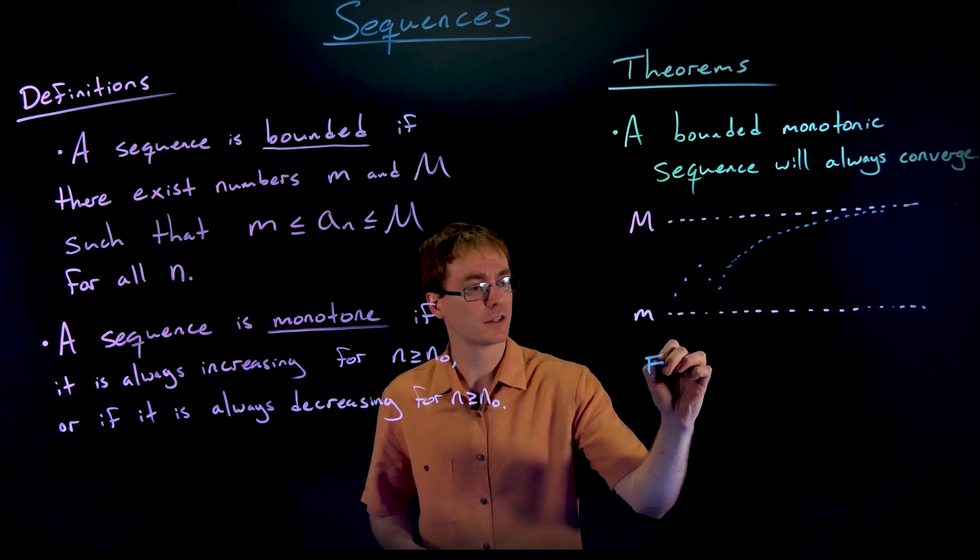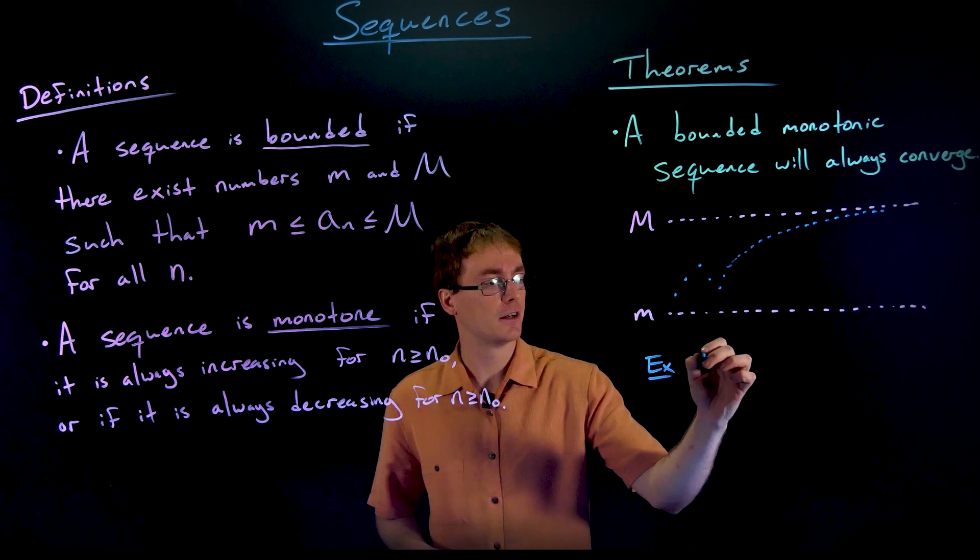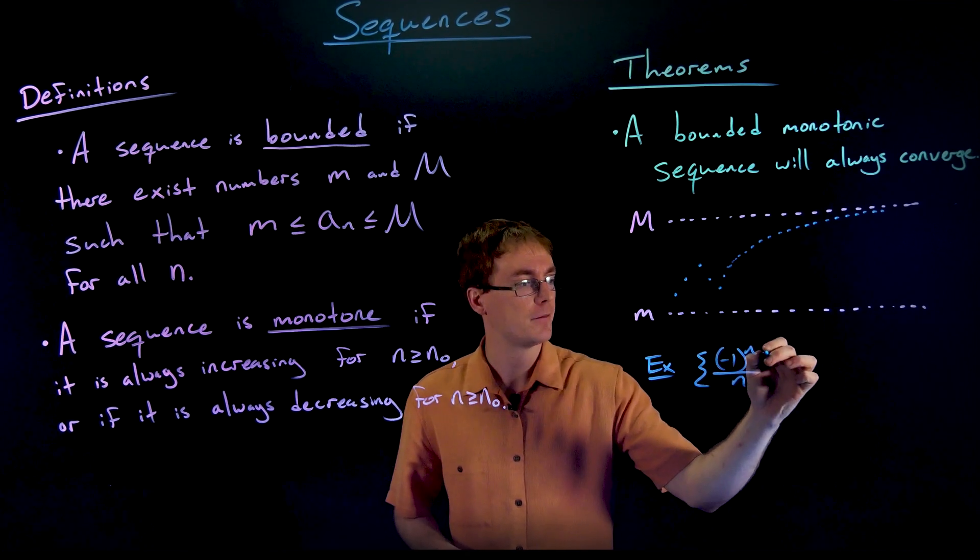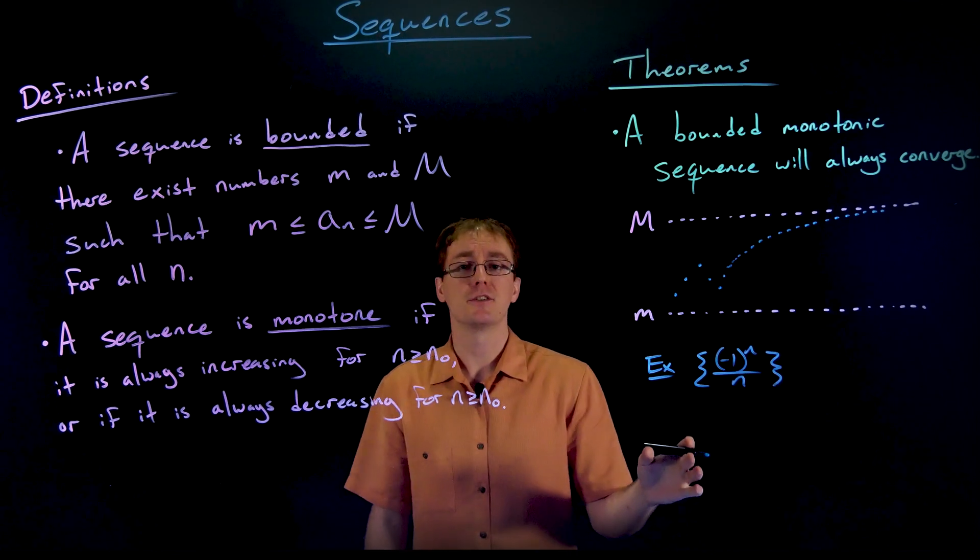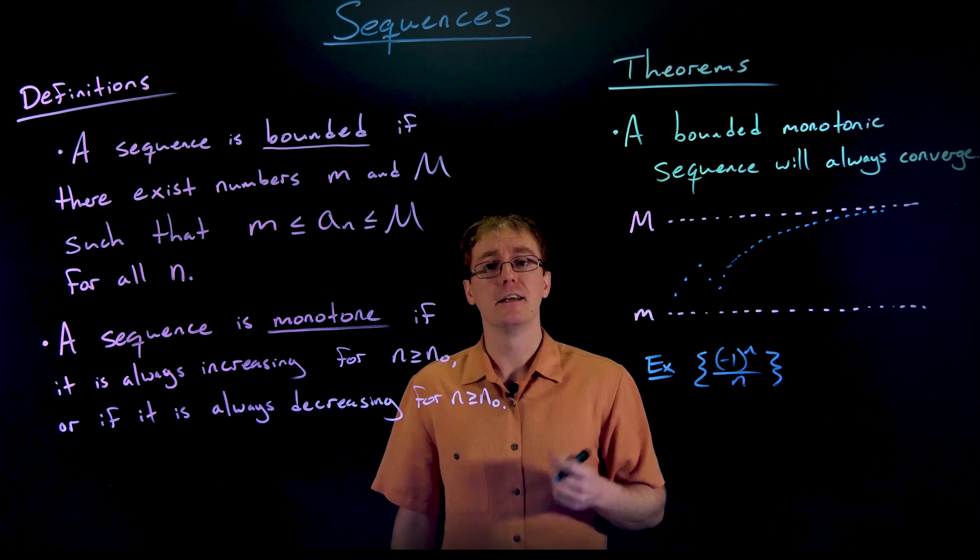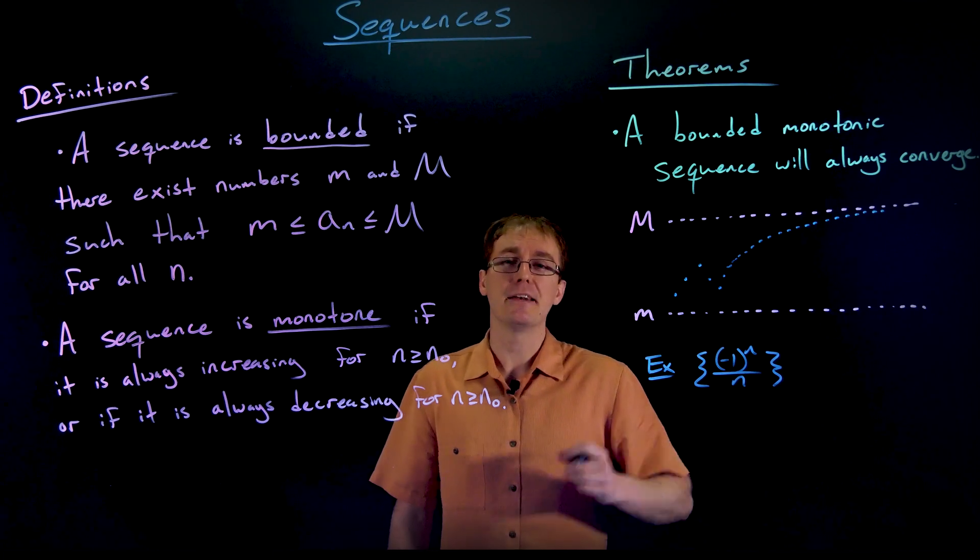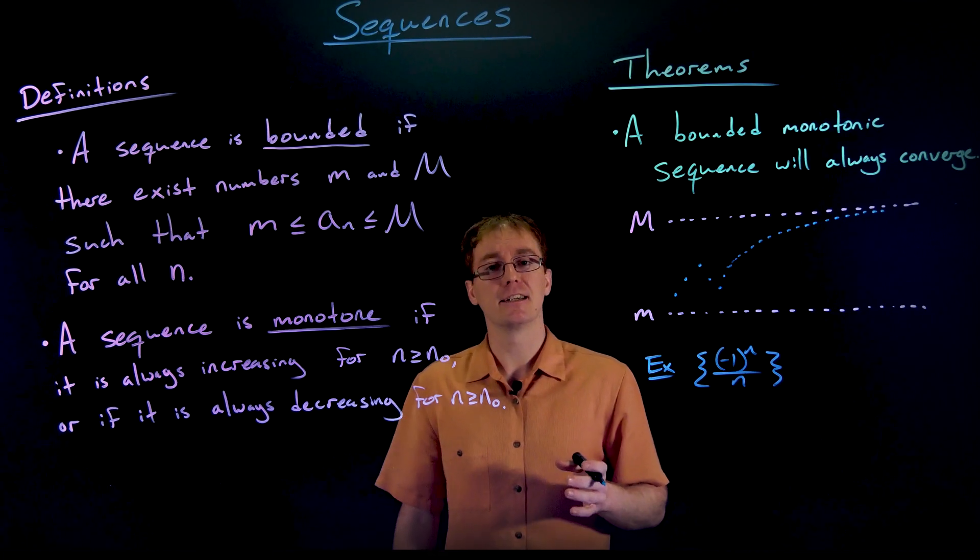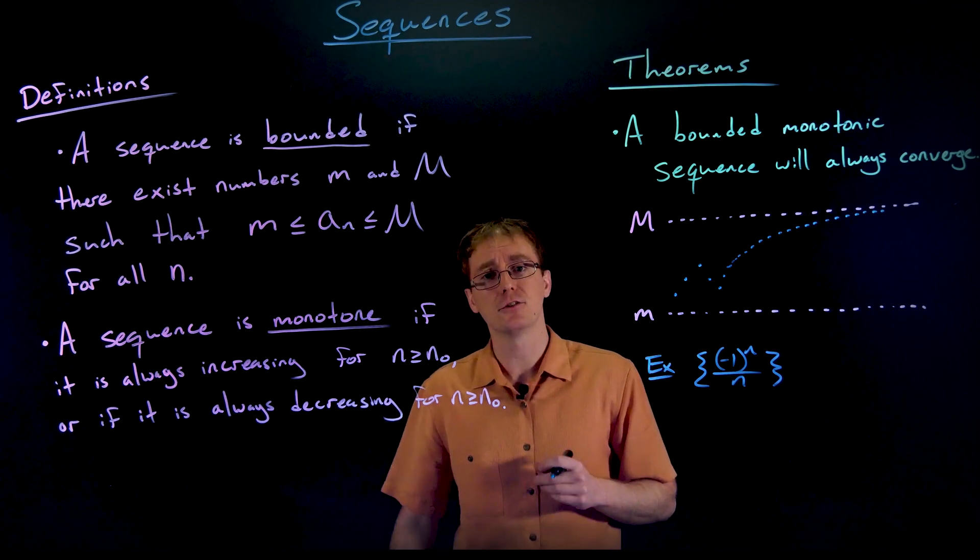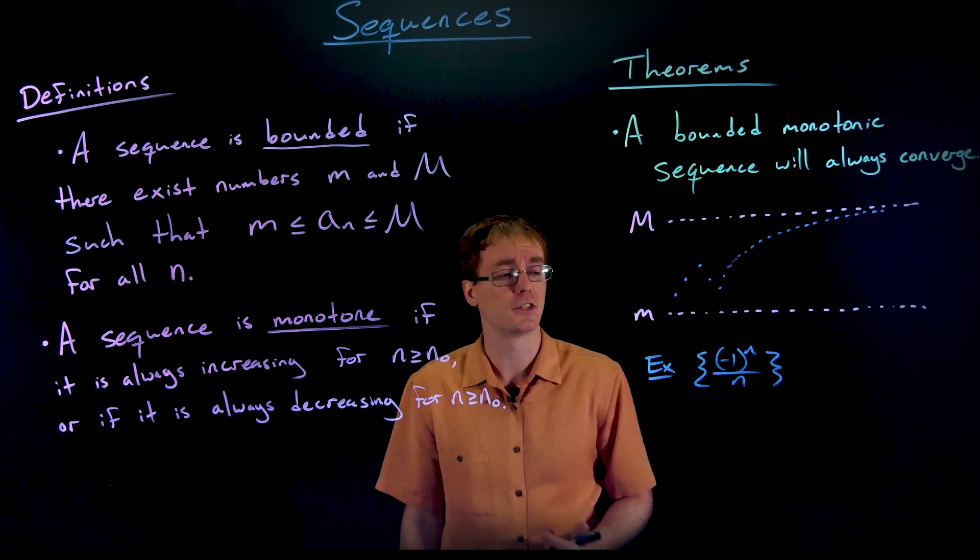Just as a quick little example, consider the sequence that we saw earlier, negative one to the n over n. That sequence is essentially monotonic in absolute value if we ignore the alternating negative one in the numerator. But that negative one in the numerator means that it is not going to be monotonic because it's switching from positive to negative values and therefore switching from increasing to decreasing.